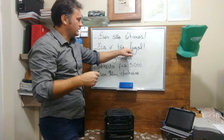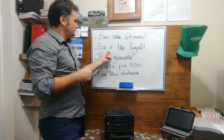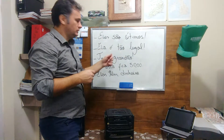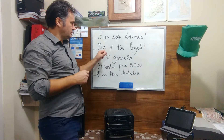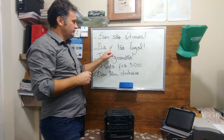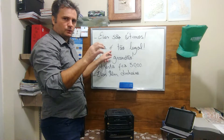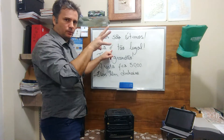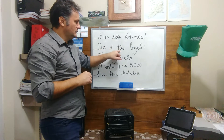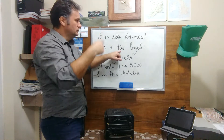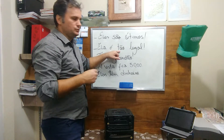Ela é tão legal — she is so cool. Here's the verb to be, third person singular feminine. Ela — she is... É. It's not ê or ã, it's é — open. Tão, just like são, with the tilde — ã sound. Tão means so, too, very. And legal means cool.